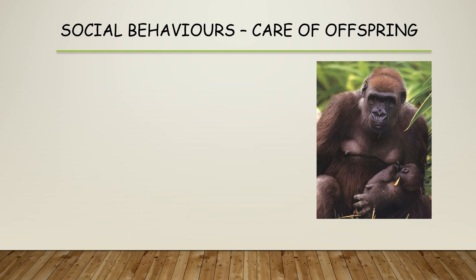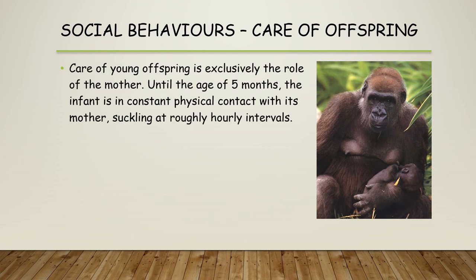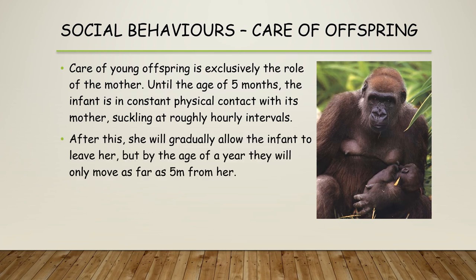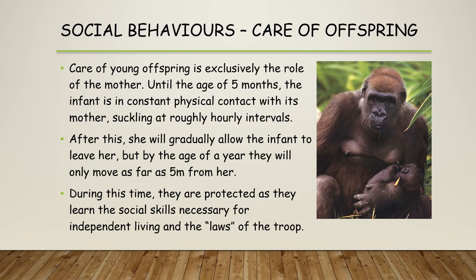Much like humans, the care of offspring is incredibly important within primate social groups. Offspring are normally looked after by the mother exclusively until the age of five months, with constant physical contact and regular suckling. After that time, the infant is allowed to leave but not stray too far from her. They are then building up and learning the social skills necessary for living within the laws of the troop.